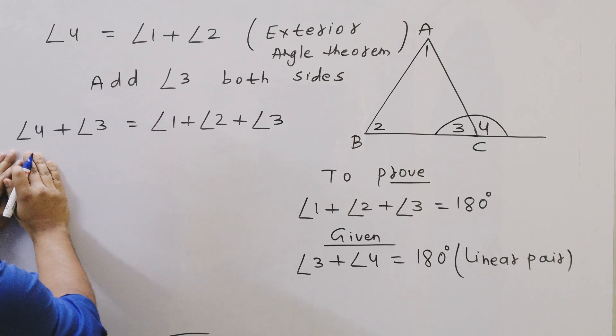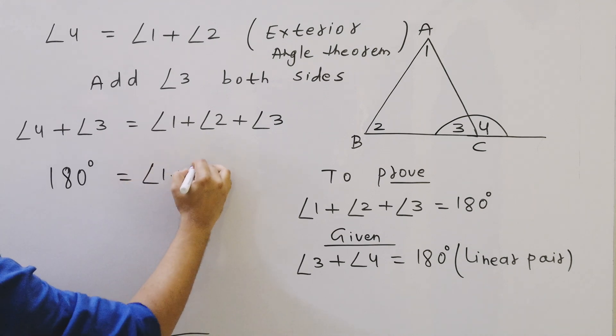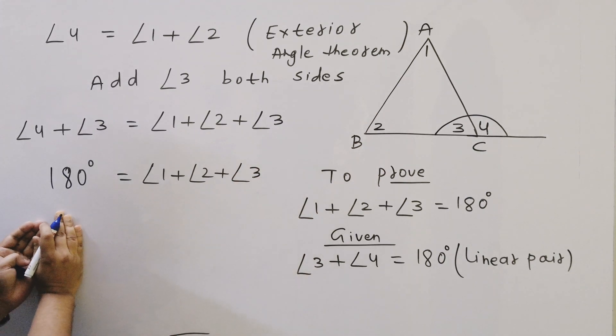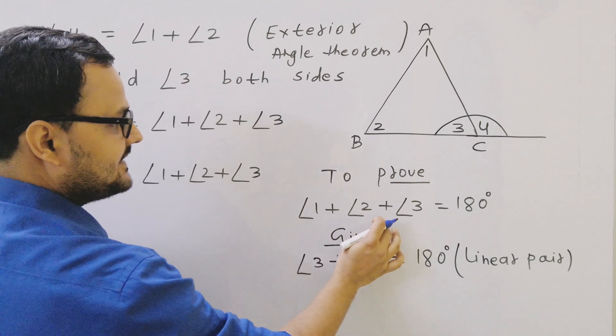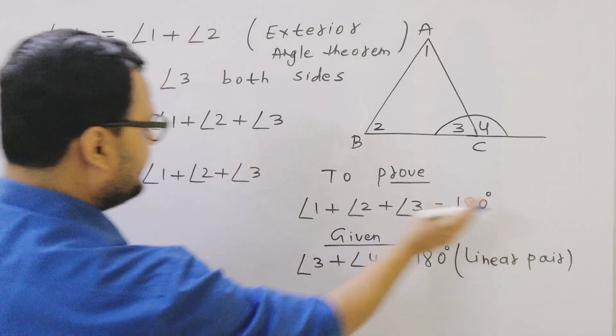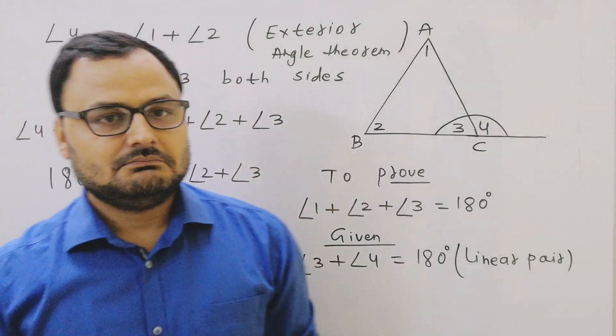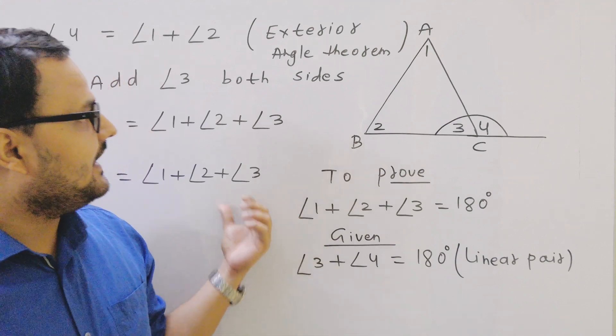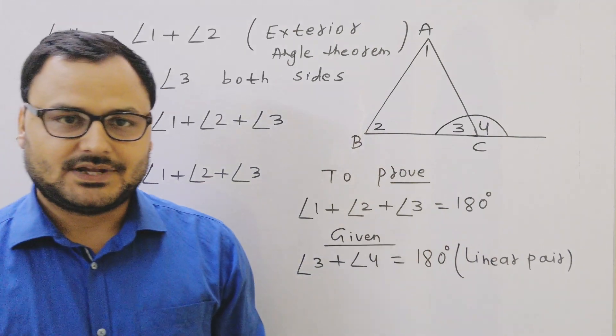We had to prove that angle 1 plus angle 2 plus angle 3 equals 180, and we just proved it. This is very easy. We have to use the exterior angle theorem and the linear pair property. Hope this video is very helpful and easy.